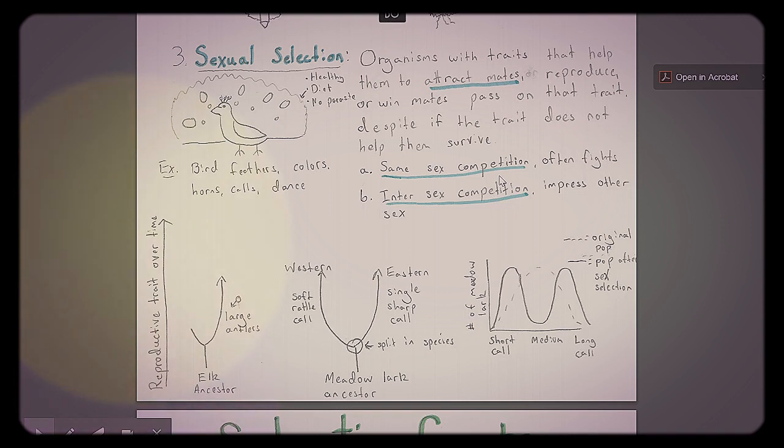So this is what passes on the trait. Dancing with bright colors doesn't help you hide from predators, but it helps you attract a mate. And so here's a couple examples, the reproductive advantage that trait gives you over time. So here's an elk ancestor, maybe short antlers, they die out. But the large antlered males survive. There's some birds called meadowlarks, and there's eastern and western, and appearance-wise, they look super similar, but their calls are different. So there must have been a group that liked the soft rattle call, and they're the western meadowlarks now. And then there's the eastern meadowlarks who like sharp single calls. So behavior can sometimes be what attracts females, and now they're two separate species because the eastern meadowlark females don't like the western meadowlark calls. The western meadowlark females don't like the eastern meadowlark calls. So now they're two different species.